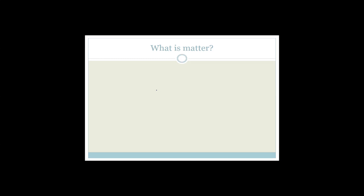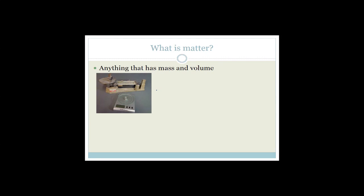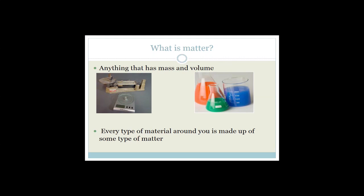So in our revision of matter and material, first of all you need to know what is matter. Anything that has mass or volume or mass and volume is matter. So anything that we can put on a scale, whether it be an old fashioned triple beam balance or a digital scale, if it gives a reading on that scale, whether it be very small or very big and has mass, then it is matter. Also, if it can take up space, if it can occupy volume, then it is matter. So basically everything around you is made up of some type of matter — your pen, your pencil, the cell phone, the laptop, everything around you, including yourself, is matter.